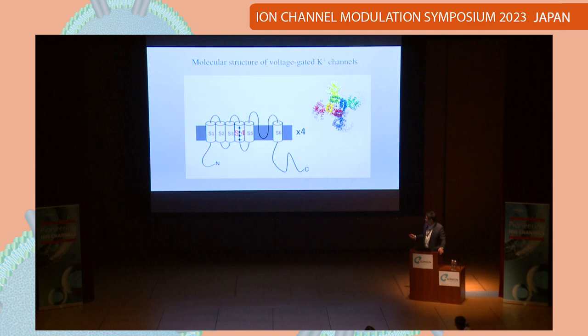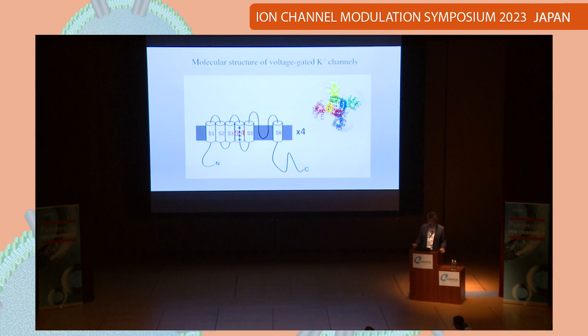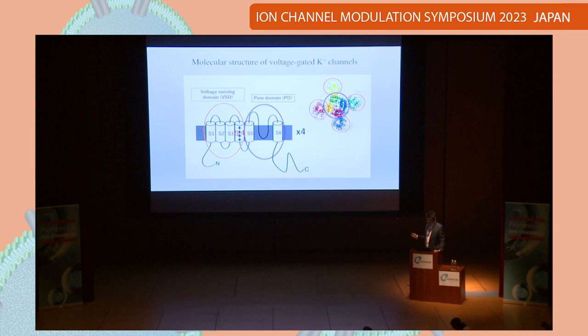This is the molecular structure of voltage-gated potassium channels. It has six transmembrane segments, and the S4 segment has several positively charged amino acid residues — that's why it can sense membrane potential or depolarization. The first four segments, S1, S2, S3, S4, form the voltage-sensing domain, and the remaining two segments, S5 and S6, form the pore domain.